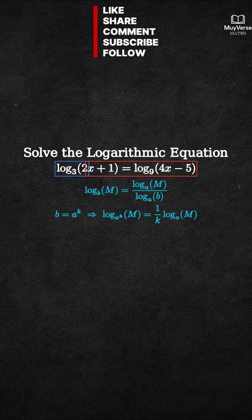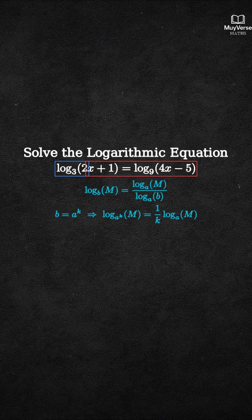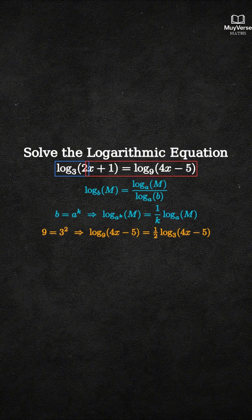Applying this with a equals 3 and k equals 2, we get: log base 9 of (4x minus 5) equals one half times log base 3 of (4x minus 5).